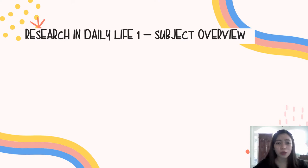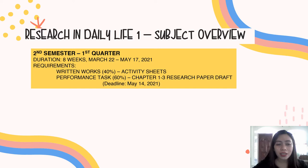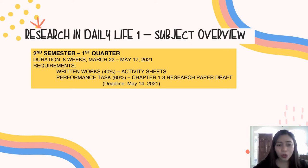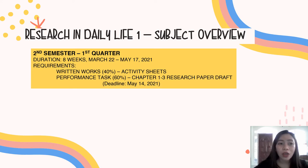Here's the subject overview for Research in Daily Life 1. For the second semester, first quarter, the duration will be 8 weeks — from March 22 to May 17, 2021. You'll be graded by the following tasks. First, we have written works, which comprises 40% of your grades, and these activities will come from the modules. Some of you had already received the modules and were able to answer the activities.